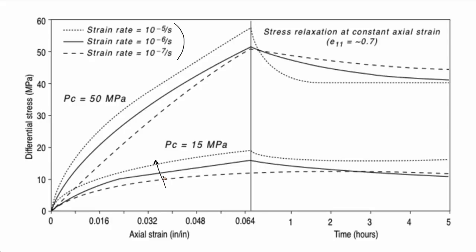There's also a pressure effect. This family of curves was conducted at a confining pressure of 15 megapascals, and this family at 50 megapascals. So you see a rate effect and a pressure effect. Usually the rate effect is intensified with pressure — the higher the pressure, the more rate effects you'll see. These were stress relaxation tests where the material was strained to a constant value around 7% strain, then the strain was held fixed and stress was monitored over time, and you see the material relaxed over several hours. This is the stress relaxation effect — real test data.